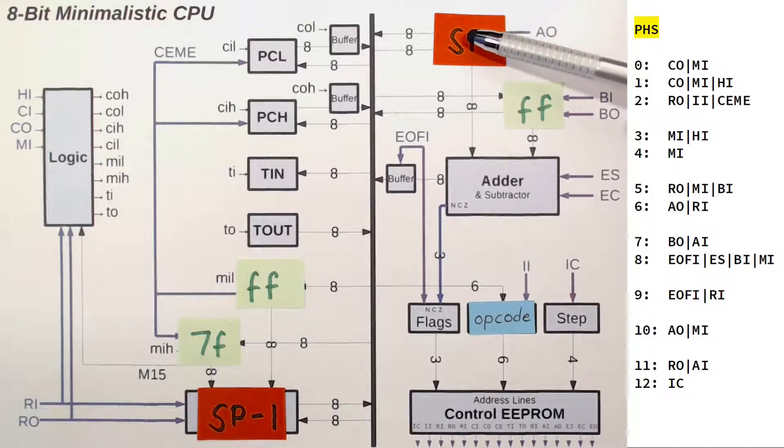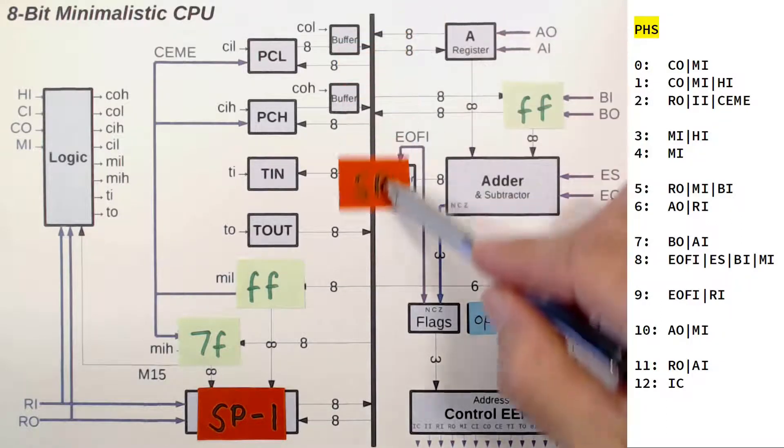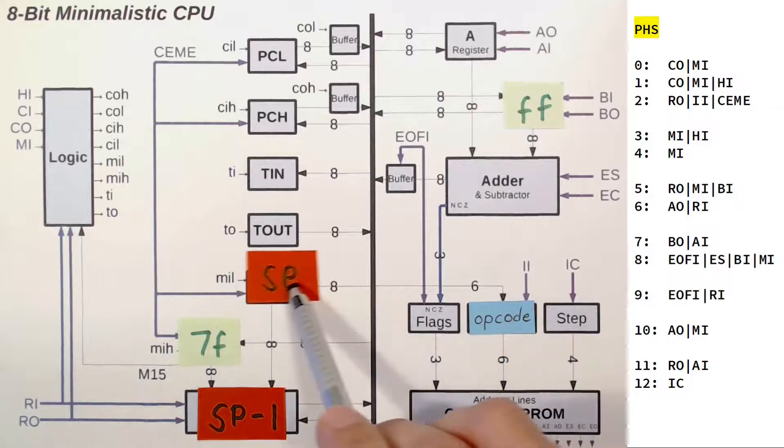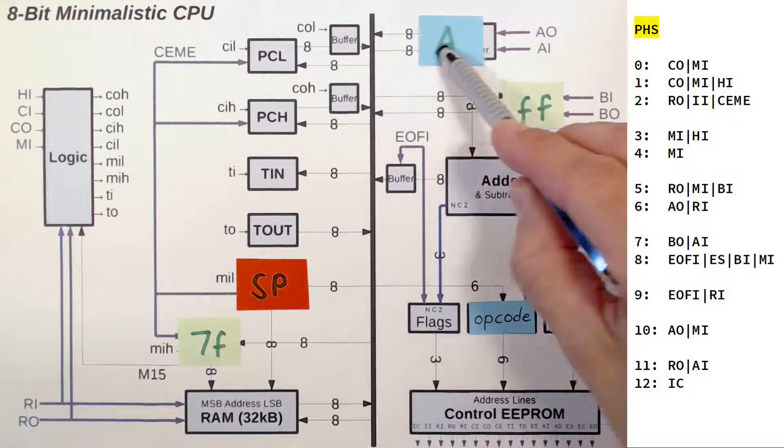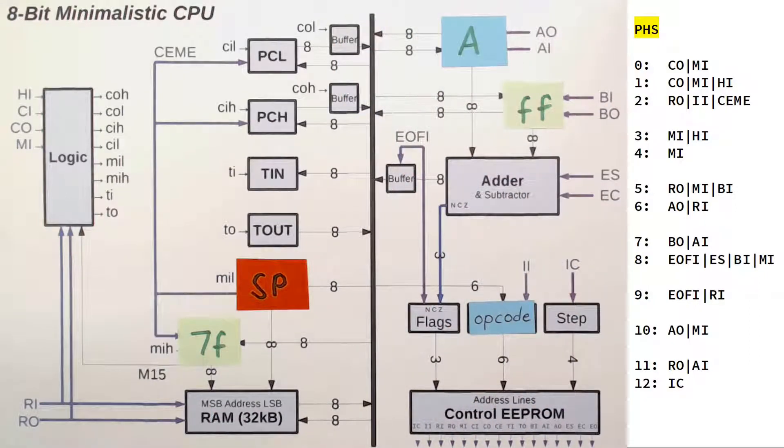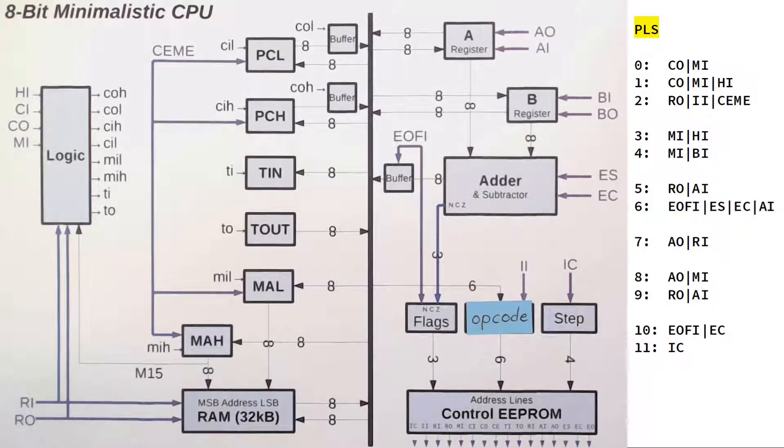We read it back in by using A out MAR in, which exposes our value we have just written to the stack. In step number 11 we use RAM out A in to move this value back into the A register. Number 12 just clears the step counter and we are done.